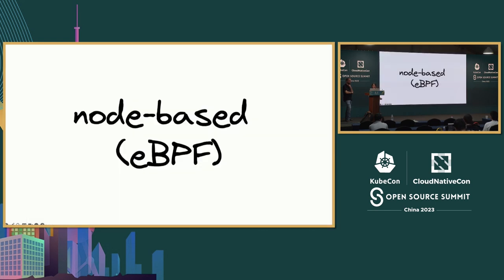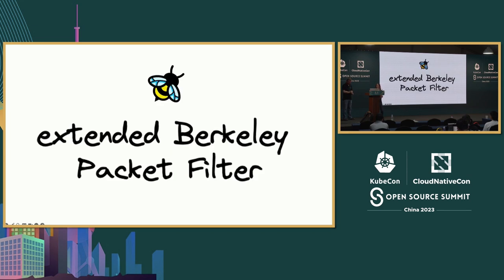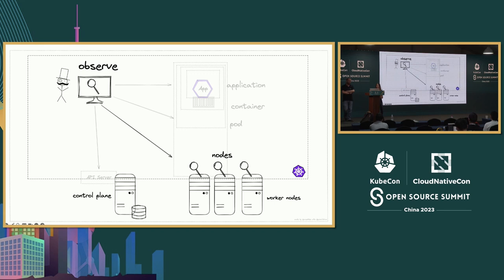That was talking about having a proxy running inside every single one of your pods. There's a different form that is node-based, called eBPF - Extended Berkeley Packet Filter. Previously we were looking at having something in every single pod; now we are observing at the level of the nodes. It's a pretty low-level functionality.